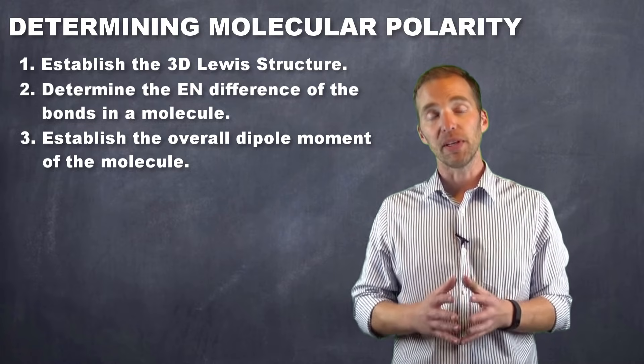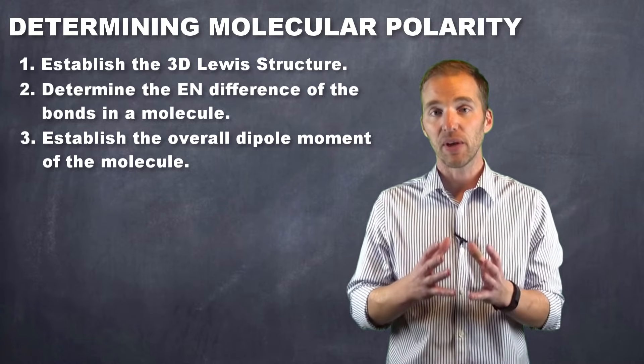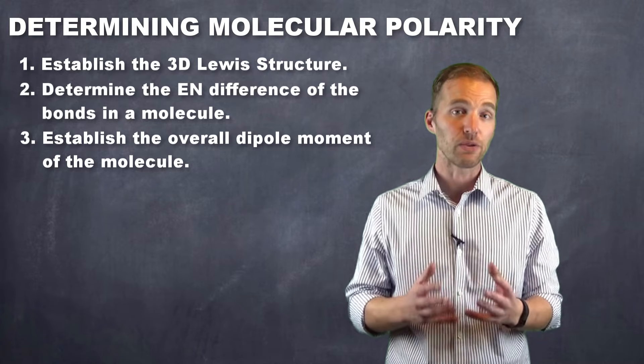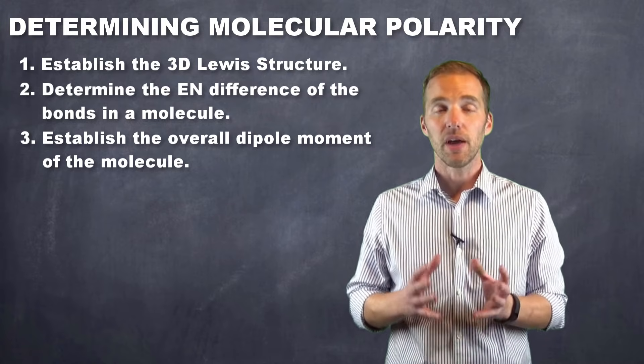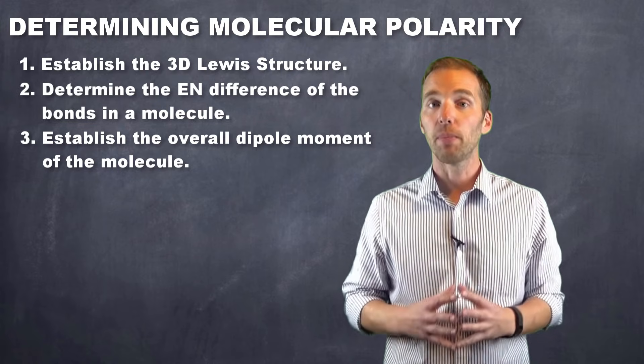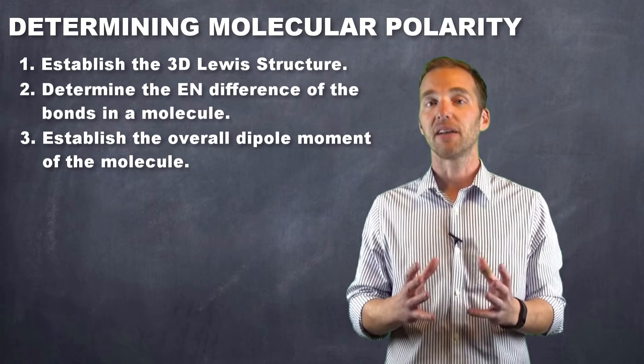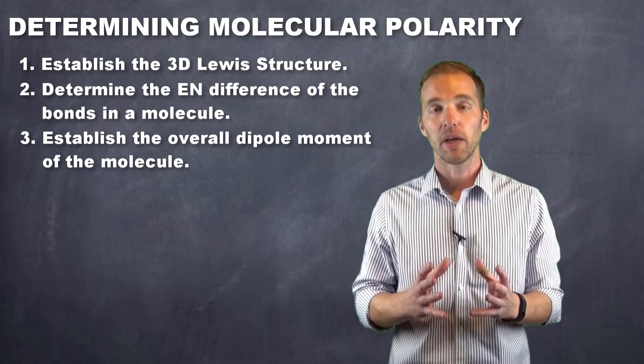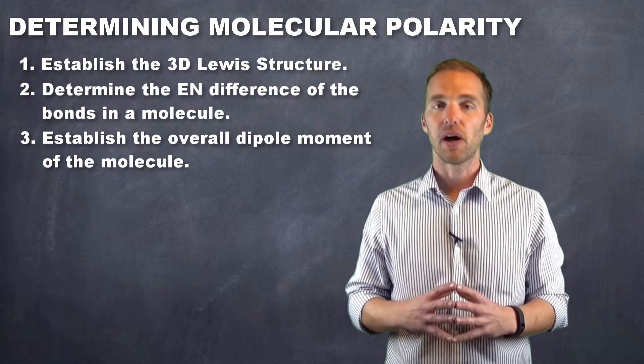Remember that the arrow points towards the more electronegative end of the bond and the more electronegative end of the molecule because the electron density is greatest around there, so we say that the dipole moment moves towards the more electronegative elements in a particular molecule, and that the other end is the electropositive end.